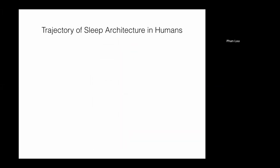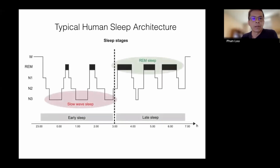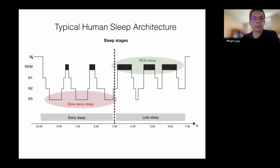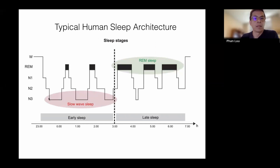Looking at the trajectory of sleep architecture in humans: a typical night shows you start awake, then fall into non-REM sleep, progressing through deeper and deeper stages characterizable by EEG. You go deeper into N3, then exit into REM sleep. You cycle through these alternating stages — slow wave sleep or N3 occurs early in the night, and later sleep is dominated by REM. In neonates, within the first month of postnatal life, infants enter sleep through active sleep rather than non-REM sleep. At around three months of age, there's a switch to the adult architecture — entering sleep first with quiet sleep, then alternating with active sleep.